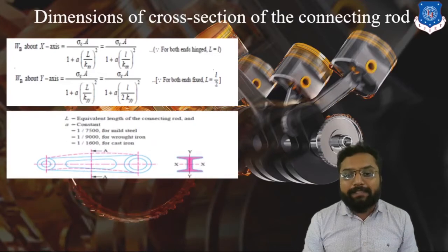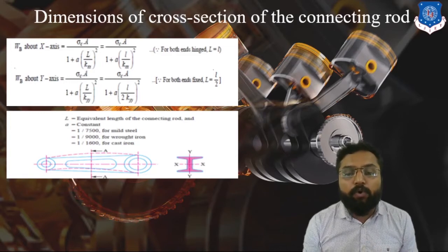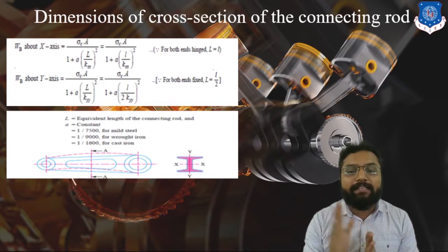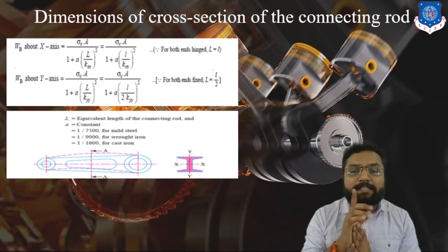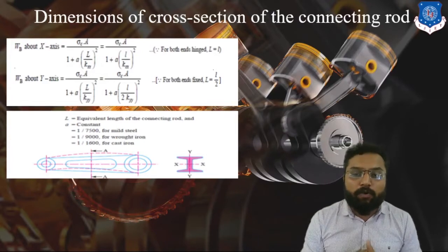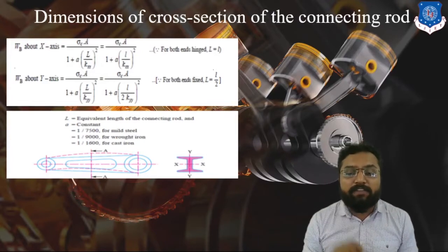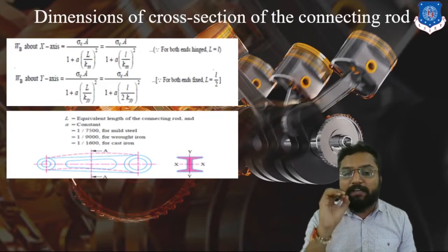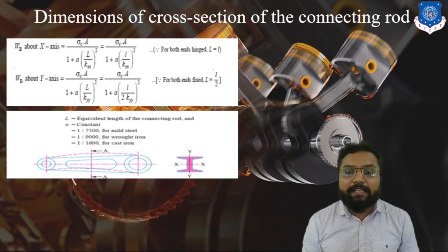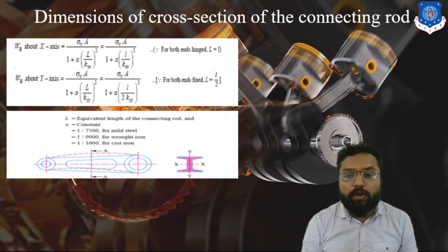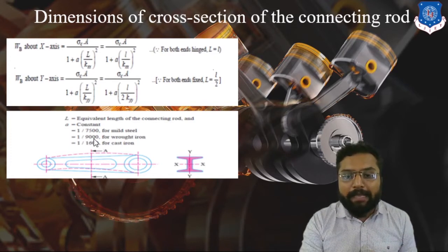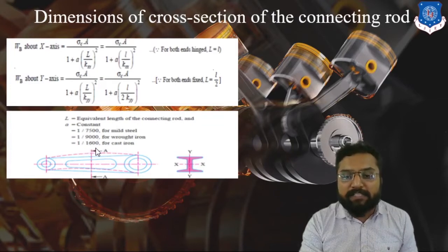The equation is: WB = σc × A divided by (1 + a × (L/KXX)²), where L is total length, KXX is radius of gyration, σc is compressive stress, A is cross-section area, and small 'a' is a constant depending on the type of material. For mild steel it is 1/7500, for wrought iron it is 1/9000, and for cast iron it is 1/1600.